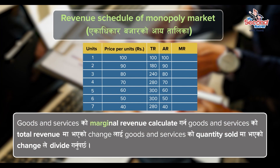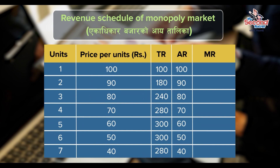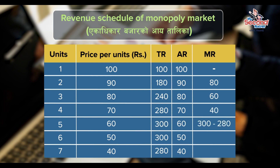Marginal revenue is calculated by dividing the change in total revenue by the change in quantity sold. If MoMo sells 1 plate, marginal revenue equals total revenue change: two plates' marginal revenue is 180 minus 100 equals 80 rupees. Third, fourth, fifth, sixth, and seventh plate marginal revenues are: 60, 40, 20, 0, and minus 20 rupees.